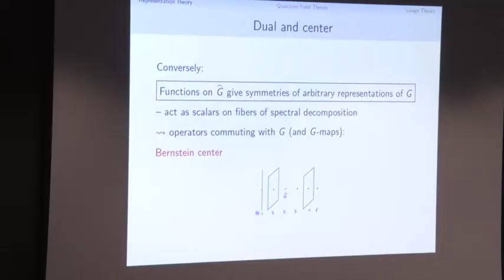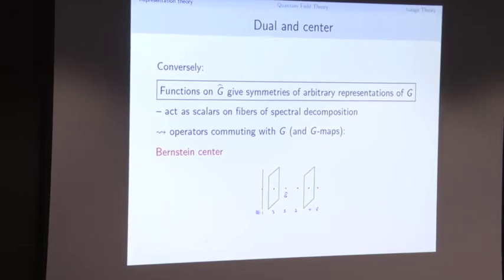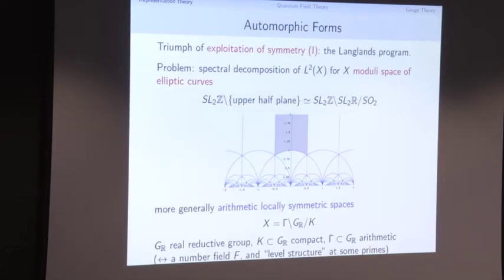Functions on the dual are this Bernstein center. We can understand how to access the dual by calculating and thinking about the center. This is our general theme for how to access the structure of representations of G. Now I want to talk about one of the most spectacular examples of this theme of exploitation of symmetry — Mackey's harmonic analysis as exploitation of symmetry — which is the Langlands program.